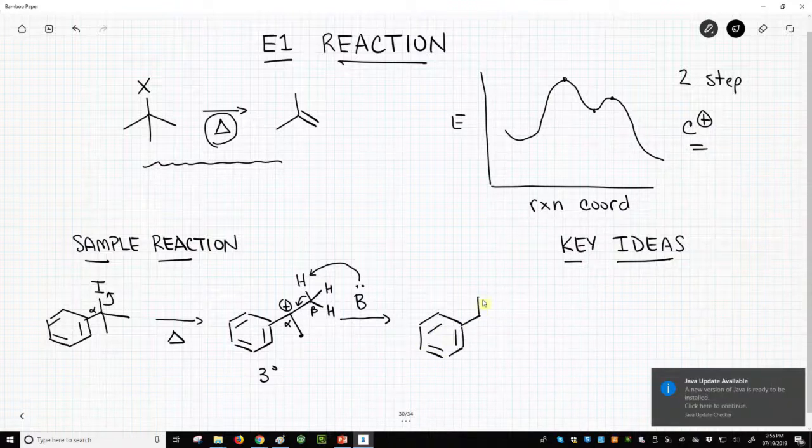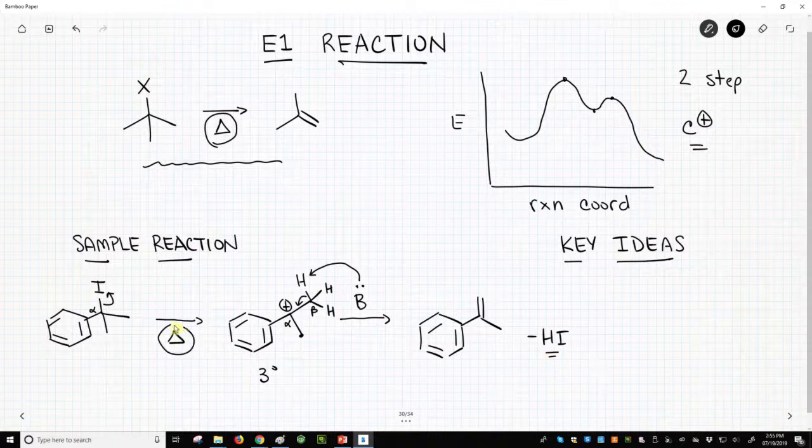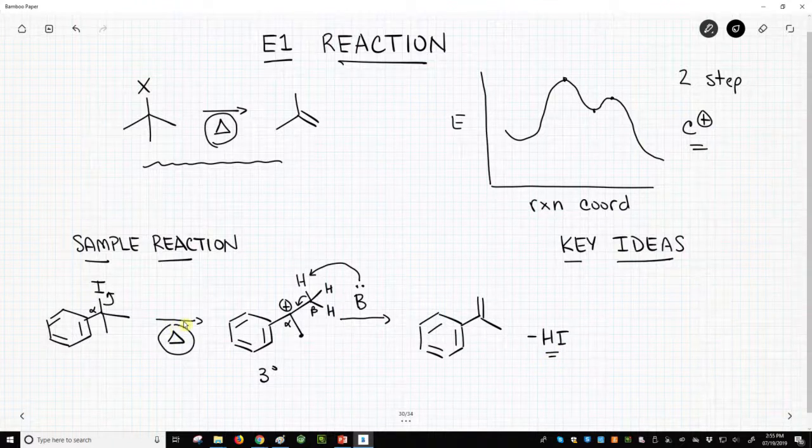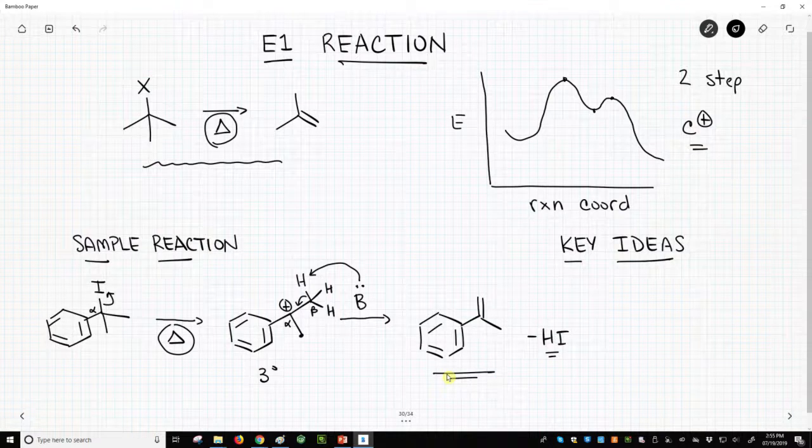And we'll get something like this. There's our elimination product. What we've lost in net is we've lost HI as a net process. Maybe under the heat conditions, you can drive off these small acids sometimes as a gas, and that can help drive the reaction to form your elimination product.